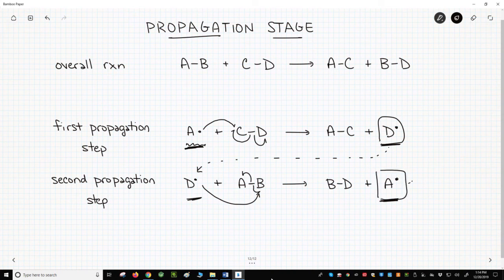This radical will go off into the reaction, collide with another molecule of C-D, and perform the first propagation step again. These steps will repeat over and over again until you run out of A-B or C-D. The propagation steps accomplish the overall reaction.